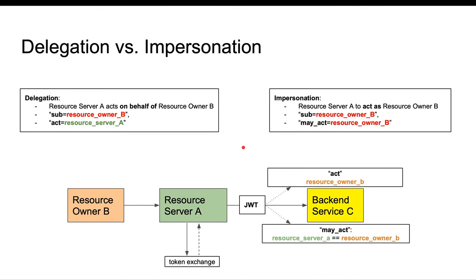Delegation versus impersonation. The spec explains that in some scenarios a token exchange is done in order to act on behalf of a resource owner, or to act as a resource owner. In the delegation scenario, the resource owner is the subject of a token sent to the resource server. I'm sticking to these terms because this is how it's specified in the spec, so if you read it this should be easier to follow.